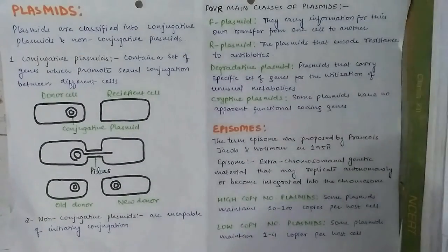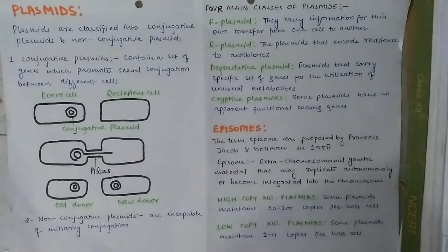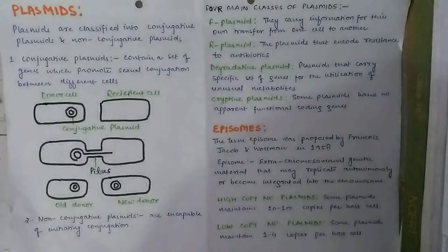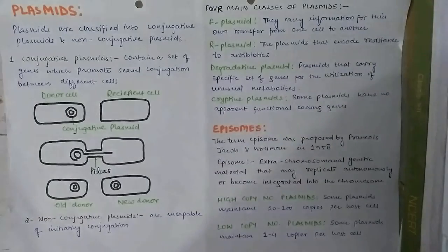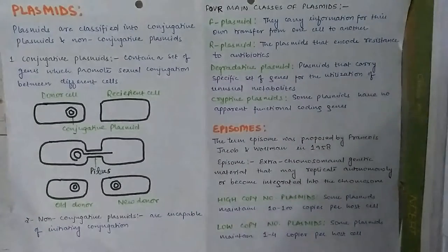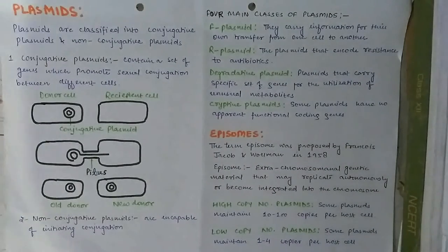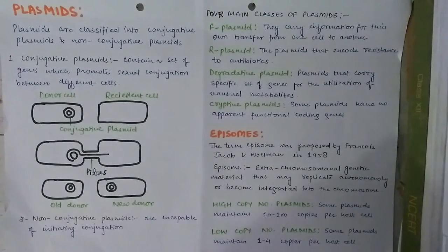Plasmids are known as high copy number plasmids if they maintain 10 to 100 copies per host cell. Plasmids that maintain 1 to 4 copies per host cell are known as low copy number plasmids. In molecular biology, two types of plasmids are commonly used.